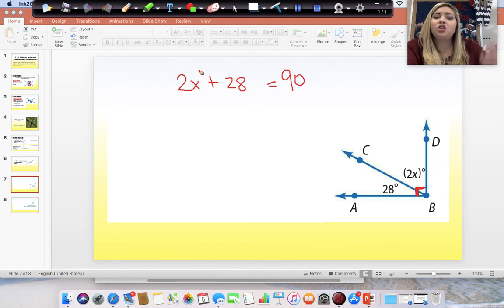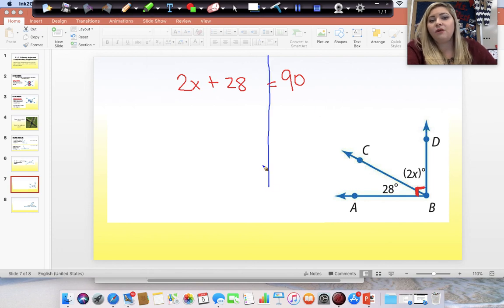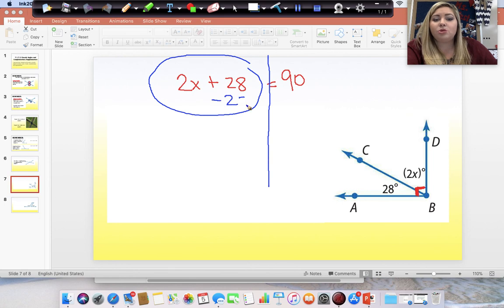And now, because you guys have done two-step equations, you know how to solve for x. So, I'm going to draw my line straight down from the equal sign. I'm going to start on the side with the variable, but I'm going to start with the number without the variable. So, this says plus 28. So, we want to do the opposite and subtract 28 from both sides.